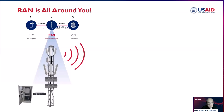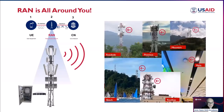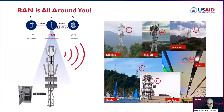Next time you're out and about, take a look around — you'll likely see cell towers and antennas on top of buildings, along the side of the road, or even inside the malls. The antennas inside malls are in-building solutions. Some people mistake them for Wi-Fi access points, but they're not — they're omnidirectional antennas or active antennas belonging to a radio access network.